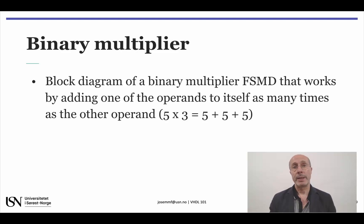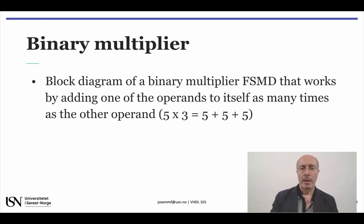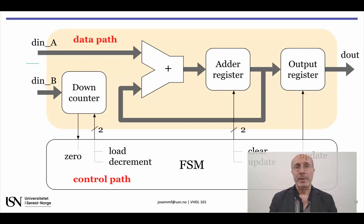An alternative solution, when time is not a problem, is to perform multiplication by adding one of the operands to itself as many times as indicated by the other operand. In this case, we will just need an adder and a counter, plus some additional registers to hold the cumulative sum and the output result. Multiplication by successive addition is actually a good example to illustrate an FSMD application, where the datapath comprises the adder, the counter, and the data registers.